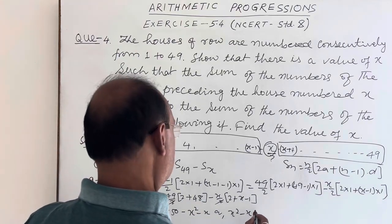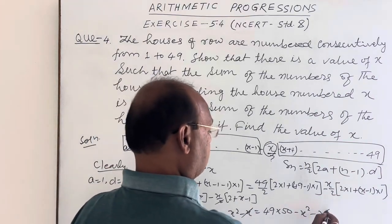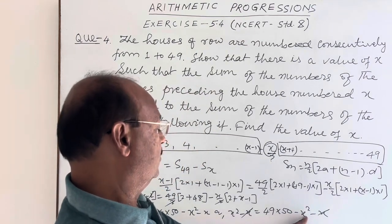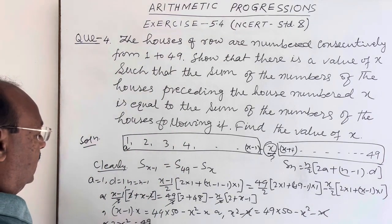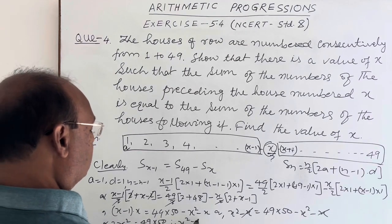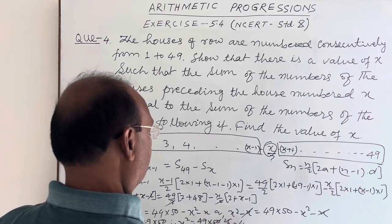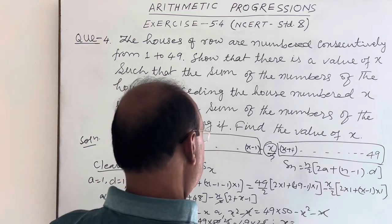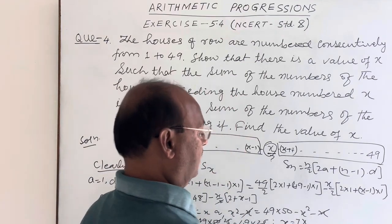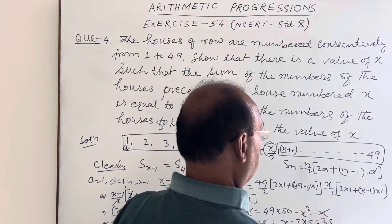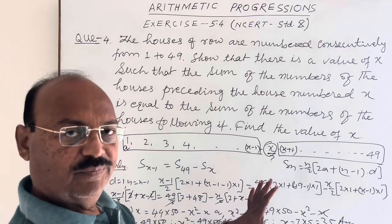So we have x² − x = 49×50 − x² − x. The −x cancels from both sides and −x² transposes to the left, giving 2x² = 49×50. Therefore x² = (49×50)/2 = 49×25. So x = √(49×25) = 7×5 = 35. The value of x is 35.